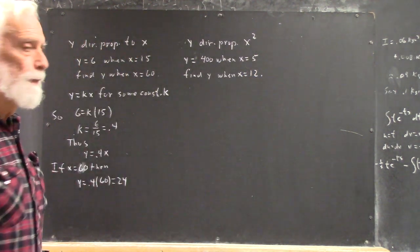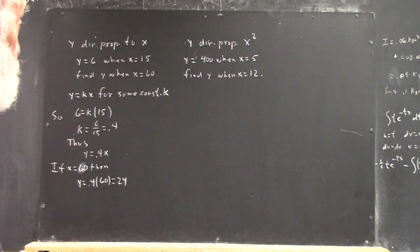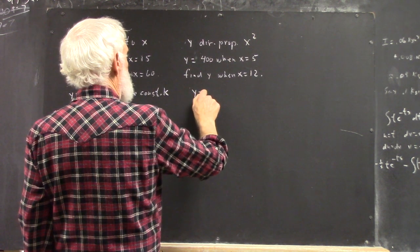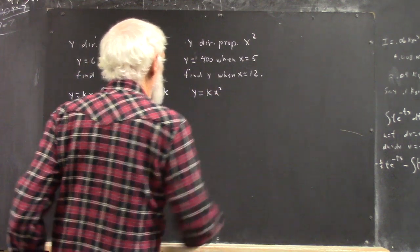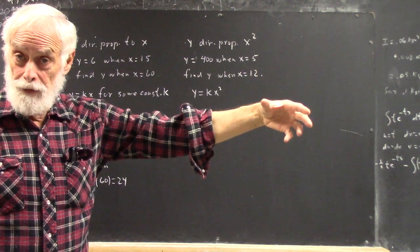Let's find y when x equals 12. Well... Directly proportional, y directly proportional to something means y equals k times that something.